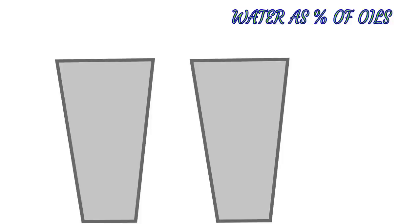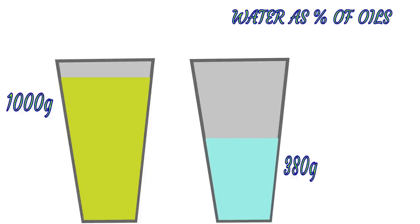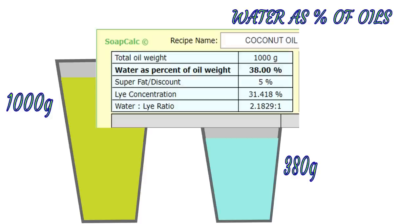For water as a percentage of oils, we simply take the amount of oils — in this case a thousand grams — and the amount of water, which is 380 grams, and compare them to each other. We can see that 380 is 38% of the oils, so that's how we get to our first measurement.